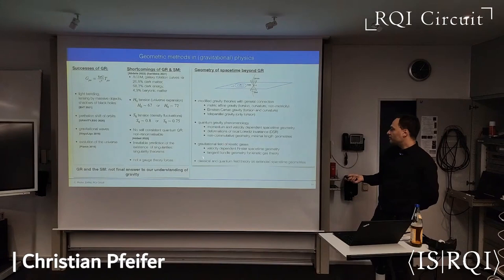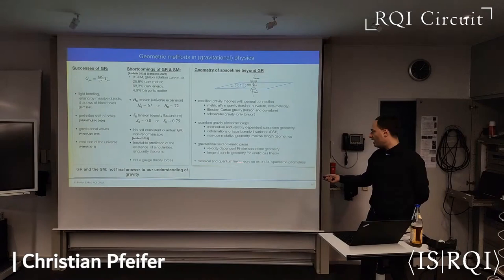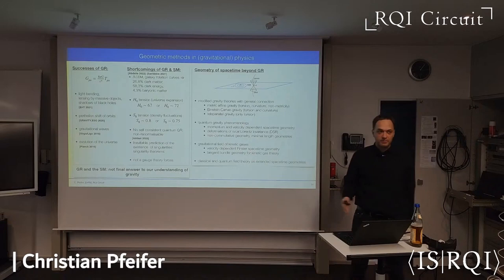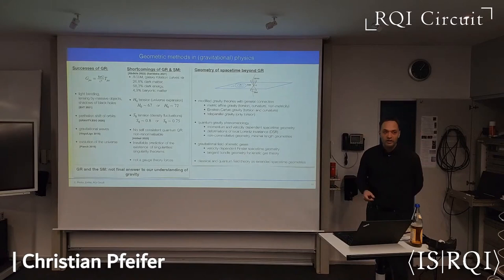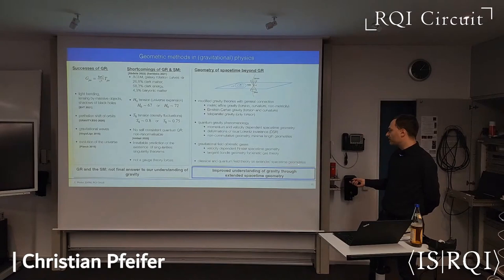Moreover, I'm interested in describing classical and quantum fields on these extended space-time geometries, on space-time geometries where we do not have a metric. I will focus in this talk on this last part, where I will present a theory of electrodynamics on a space-time where we don't have a metric, but just a more general geometric structure. I will show that we can write down quantum field theories in the ordinary way, without needing local Lorentz invariants or a space-time metric. The overall goal of my research is to gain an improved understanding of gravity through an extended space-time geometry and to predict observables from this modified space-time geometry.